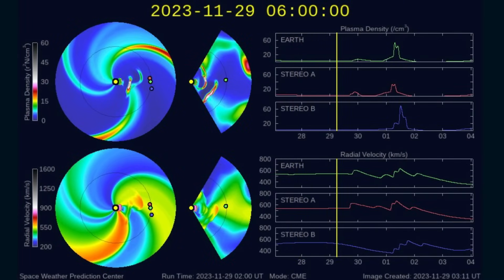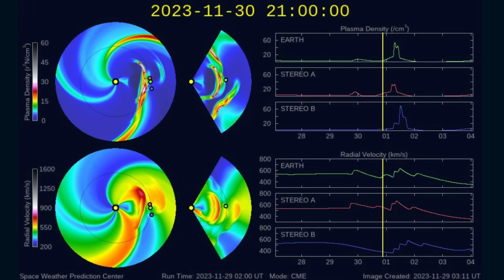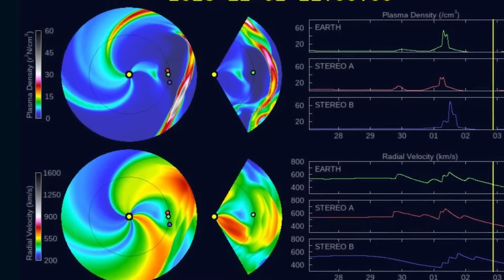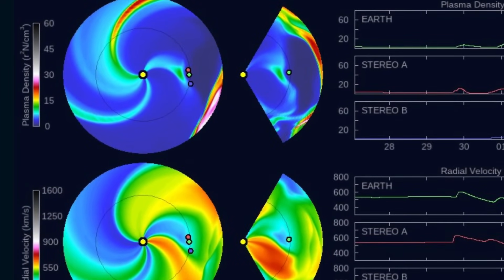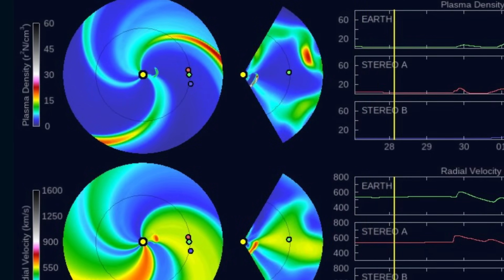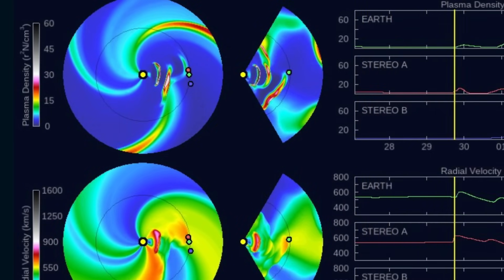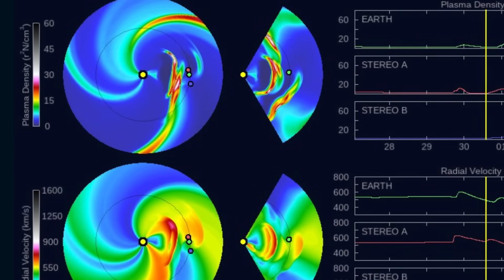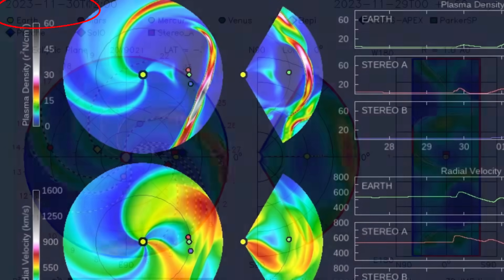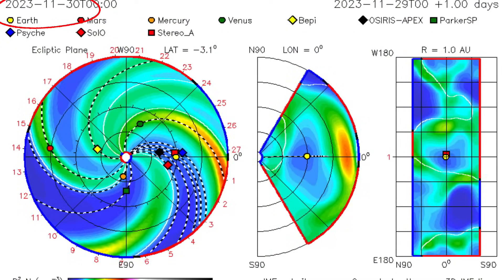Now let's have a look at the updated Space Weather Prediction Center spiral here, showing a cannibal CME catching up to the first two that had shot away at Earth. And this third one is going to be coupling everything on the day of impact, December 1st, 2023. Huge impact there. It's going to be interesting to see how things play out.